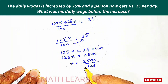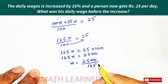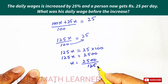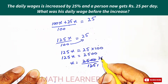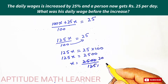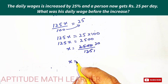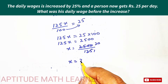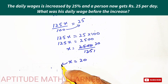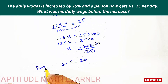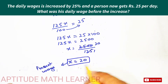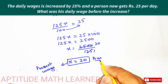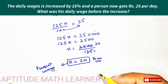Dividing 2500 by 125, we get x equals 20. So the present wage before the increase was rupees 20 per day. I hope you have completely understood. Thank you very much.